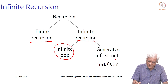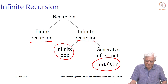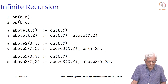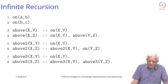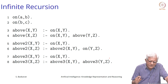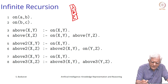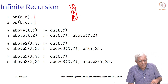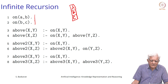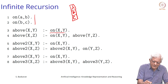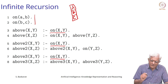Let us do a quick recap with our knowledge base of three blocks: A is on B and B is on C. We then have a definition for 'above'. There are three definitions: above, above2, and above3 — all three have the same base clause that if x is on y, then x is above y. The recursive clause is different in each.